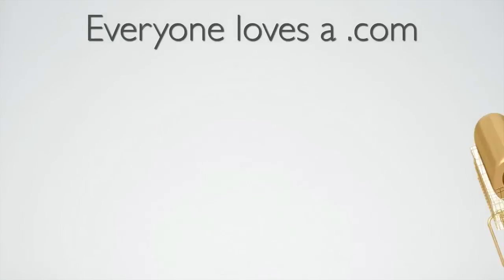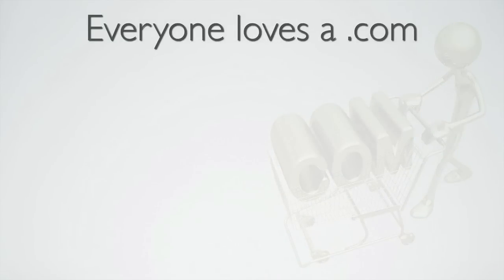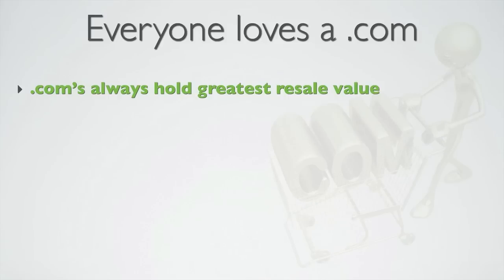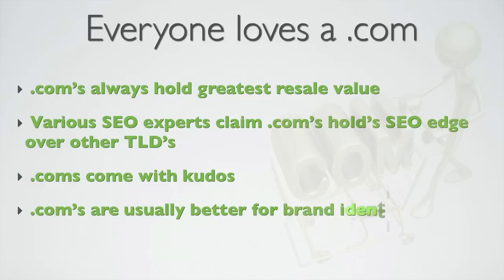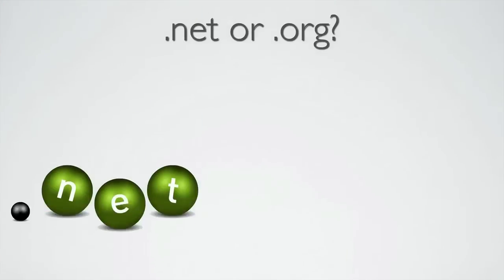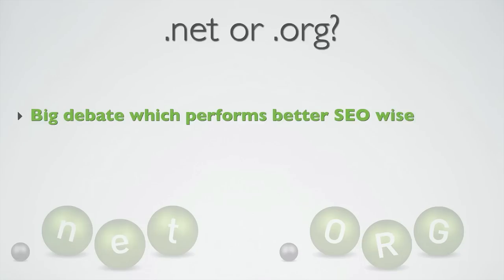All other things being equal, .com domains will always hold the greatest value. Although Google claims that the extension has no SEO advantage or disadvantage with TLDs, countless SEO experts claim that .coms have the SEO edge. With .coms being the most sought-after domain extension, there's always a certain kudos in holding a .com, which will definitely work in your favor if you're looking to build a brand identity. After that, there's debate about whether .nets or .orgs have the edge, but personally I've had better SEO experiences with .orgs.